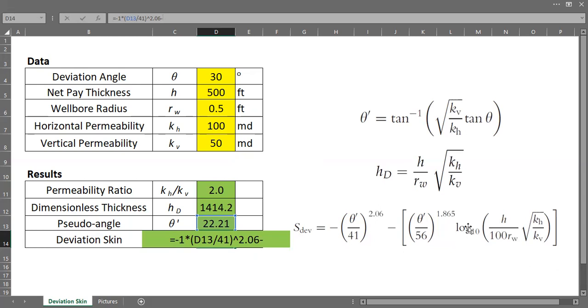Minus this term. Open, open again. So the angle divided by 56, close, to the power of 1.865 multiplied by the logarithmic of this term. And this term is actually dimensionless thickness. But dimensionless thickness divided by 100. So please be careful. Here we have H divided by Rw for dimensionless thickness multiplied by the square root of permeability ratio. So I will use this one, the logarithmic of the dimensionless thickness divided by 100. I will close, I will close. And then I will close it once again. Enter.